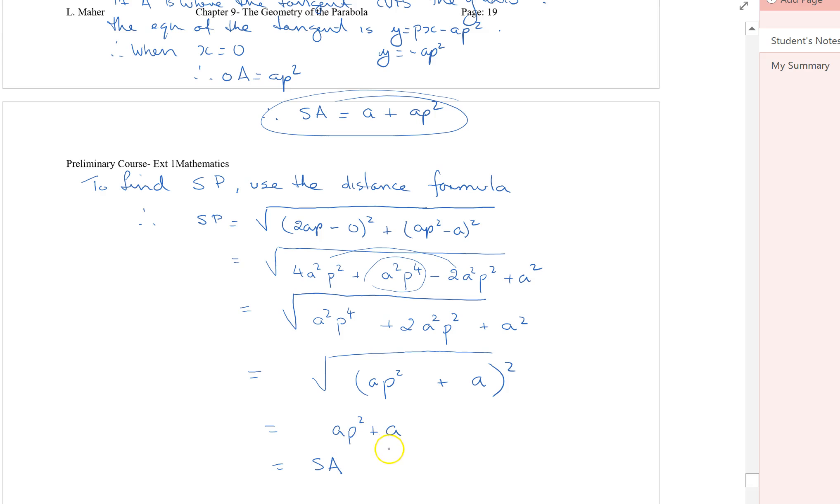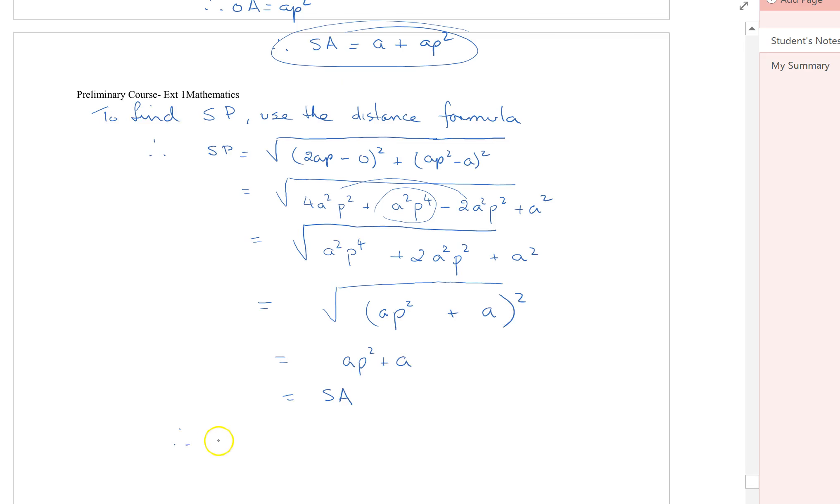AP squared plus A. So what have I done? Therefore, I've shown the triangle, was it, SPA, is isosceles with base angles equal.